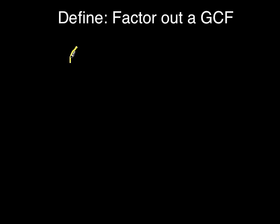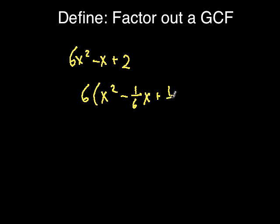For example, given 6x² - x + 2, you would factor out 6 to get 6 times (x² - 1/6x + 1/3).